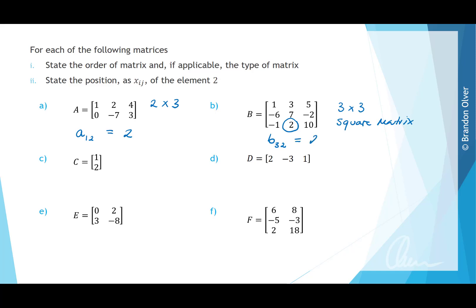For matrix C, it has 2 rows and 1 column, making it a column matrix. The element 2 is at position C row 2, column 1. For matrix D, it has 1 row and 3 columns, making it a row matrix. The element 2 is at position D row 1, column 1.